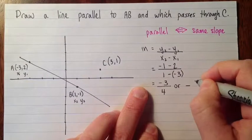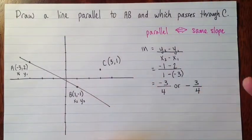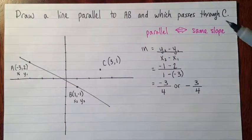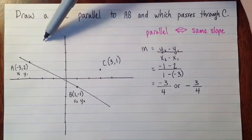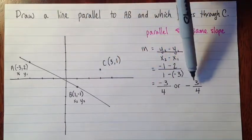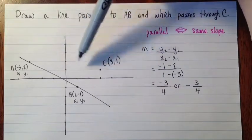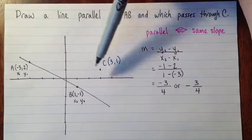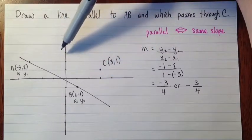We can also write that, of course, just with the negative out front. So what that tells us is that the line we're going to draw is going to look kind of like this, right? We know that because we want it to be parallel to AB, but it's going to have a slope of negative 3 fourths. So knowing that will help us get another coordinate of a point on the line, so that it's in exactly the right place.